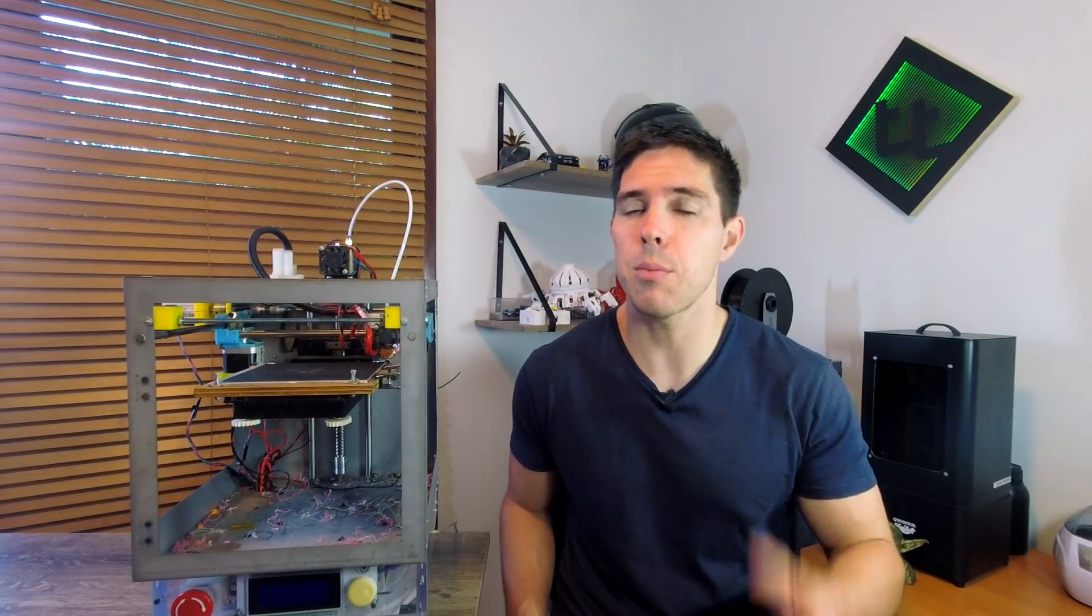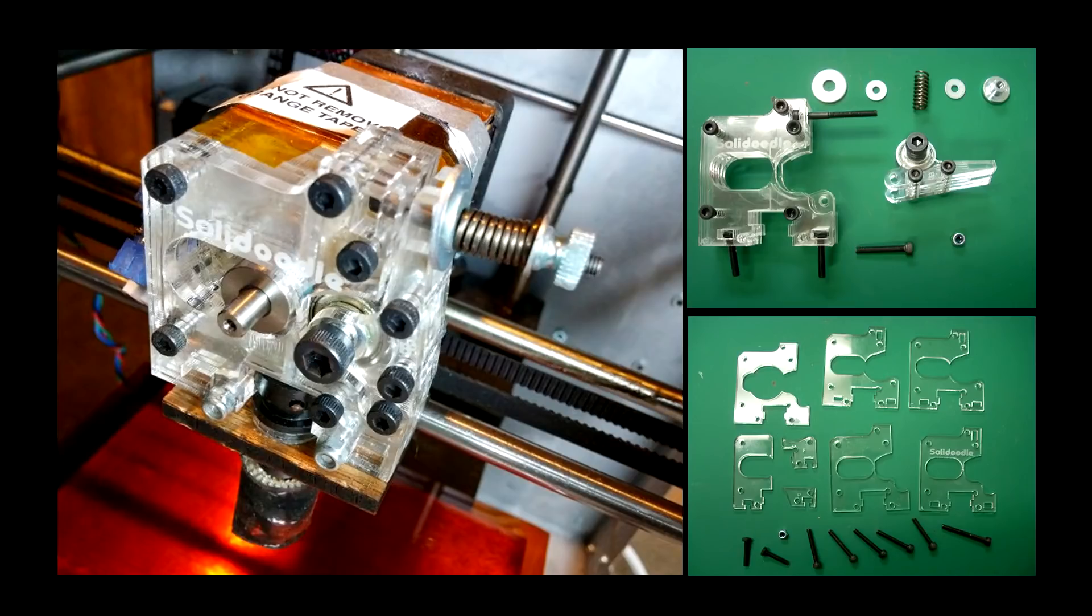Now, any original Solidoodle 2 owners will remember the horror that was the acrylic jigsaw extruder that came with the printer. It was pretty clever in its design because all the pieces were laser cut and designed to be stacked up on top of each other to make something much thicker and fairly functional. The trouble was as soon as you got a jam, which wasn't infrequent, it was really hard to pull apart, hence the nickname, jigsaw.